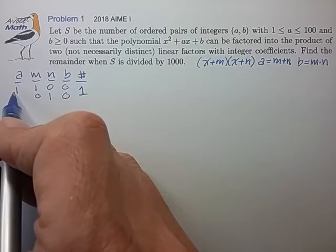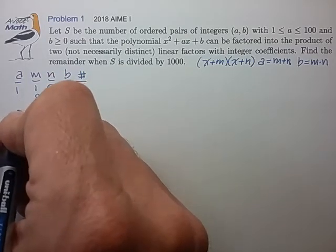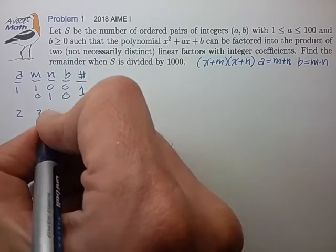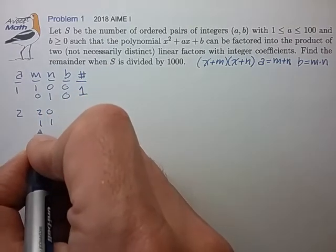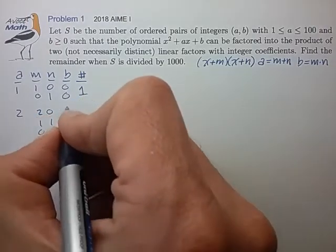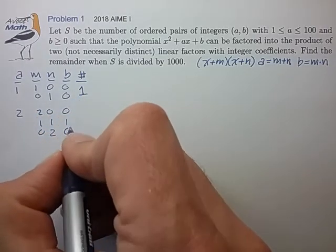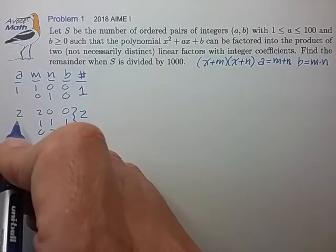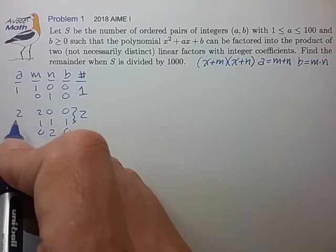Let's try a = 2. M and n would have to be either (2, 0), (1, 1), or (0, 2). The values of b are 0 and 2. There are two such values of b, so two such ordered pairs (a, b) for a = 2.